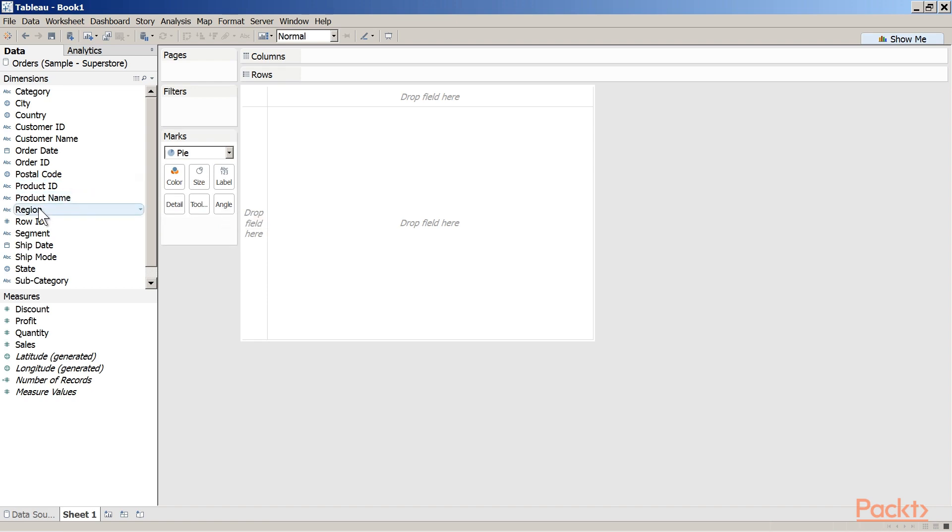Drag the dimension region from the dimensions area in the data pane and place it on color on the marks card. We have data for four regions: central, east, south, and west. The pie chart therefore gets split into four slices, one for each region. Notice that all the slices are the same size.